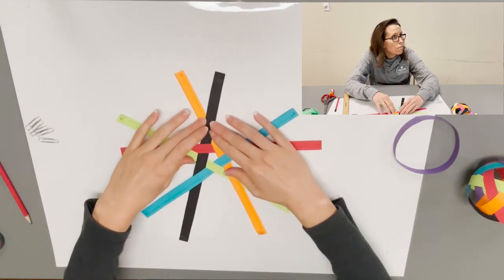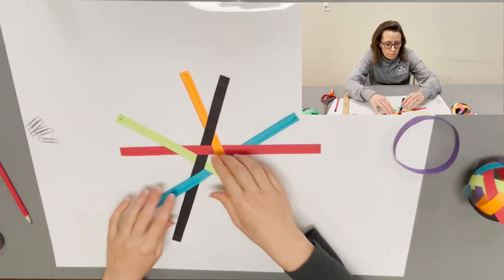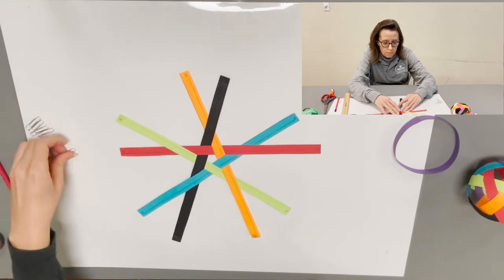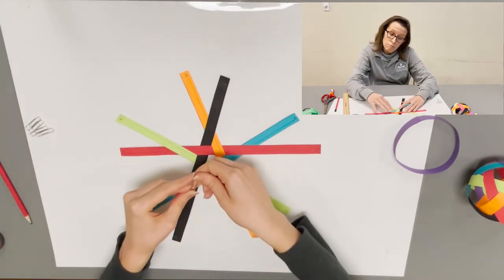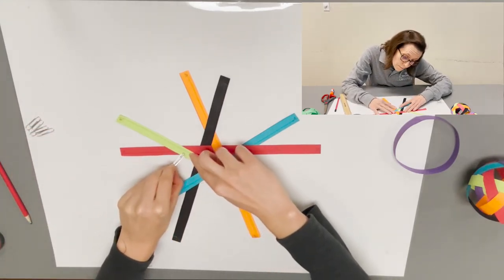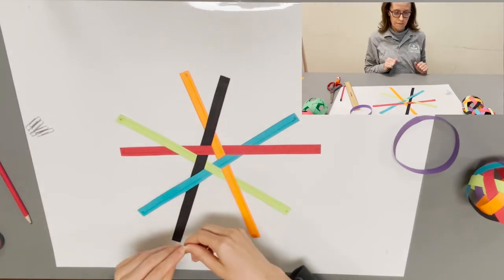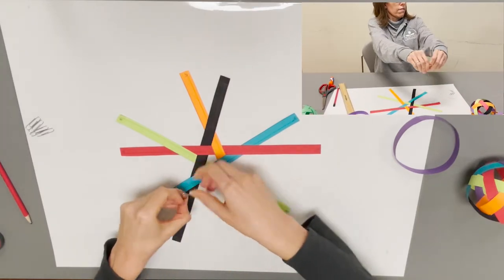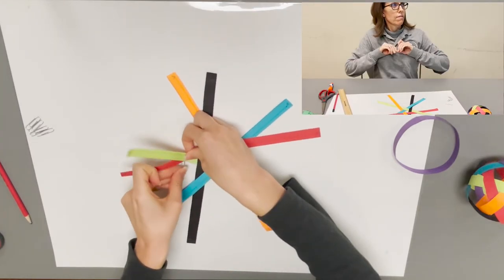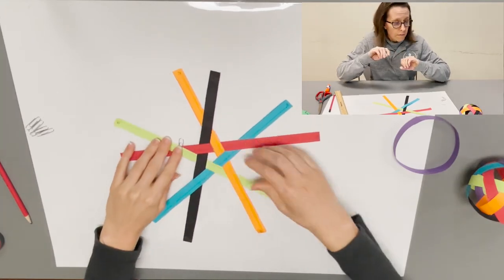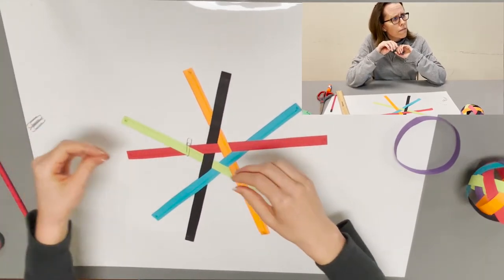The next step is to push everything towards the center so that this center piece, the pentagon, is as small as you can make it. Then you're going to take your paper clips and paper clip each point where they cross.